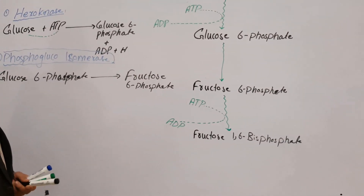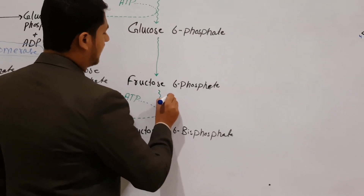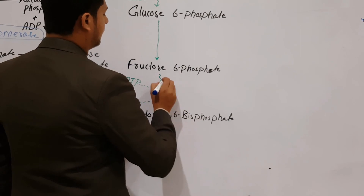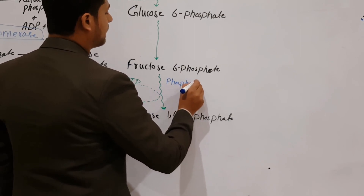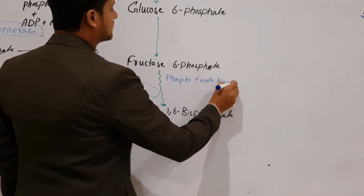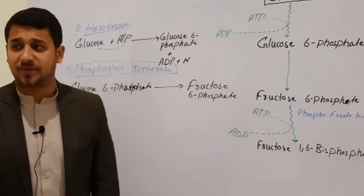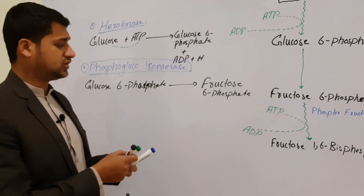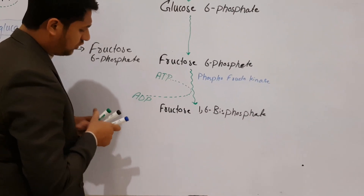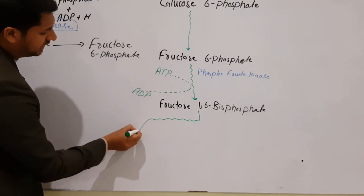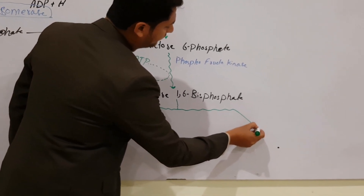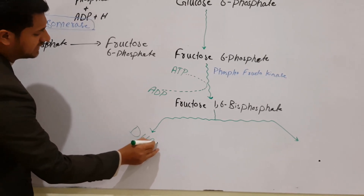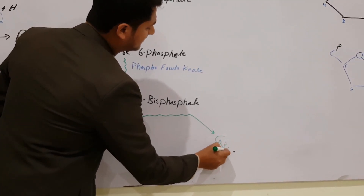The enzyme required for this reaction is phosphofructokinase — 'kinase' refers to the addition of ATP. This is the last step of the preparatory phase. Fructose-1,6-bisphosphate is divided into two different molecules: one is an aldehyde called glyceraldehyde-3-phosphate (G3P), and the other is a ketone called dihydroxyacetone phosphate (DHAP).